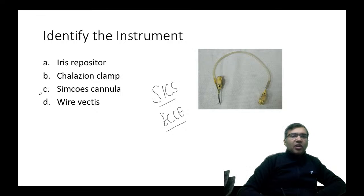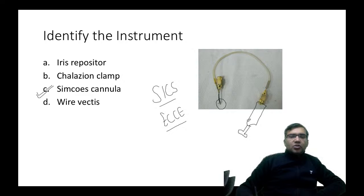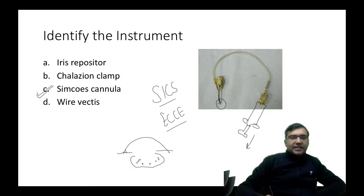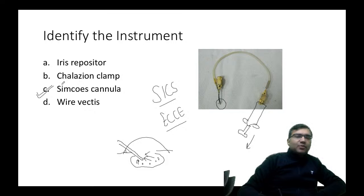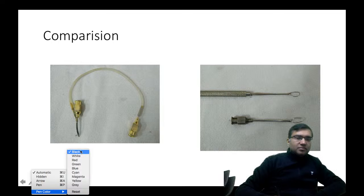Another instrument used in SICS or ECCE is the Simcoe cannula. It has a fenestrated end and an opening for a syringe. After nucleus removal, some cortical material remains; the Simcoe cannula goes inside to aspirate this residual cortical material. Do not confuse the Simcoe cannula with the wire vectis.